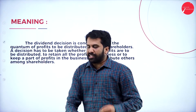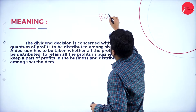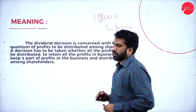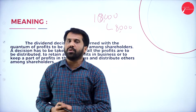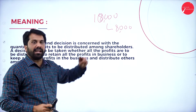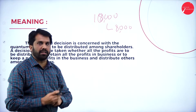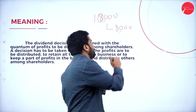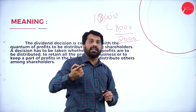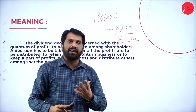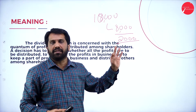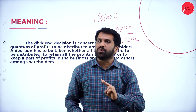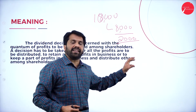Out of 10,000, assume 8,000 is given to the shareholder. This 8,000 is called dividend distribution. Out of 10,000 profit, 8,000 is given to the shareholder and the balance 2,000 is kept for further investment — this is called retained earning. So out of 10,000, 8,000 given as dividend and 2,000 kept as retained earning.